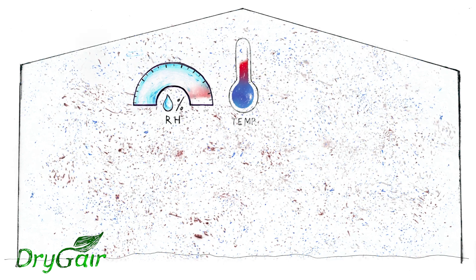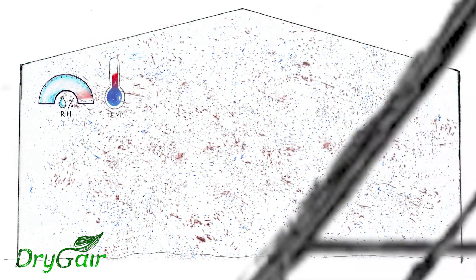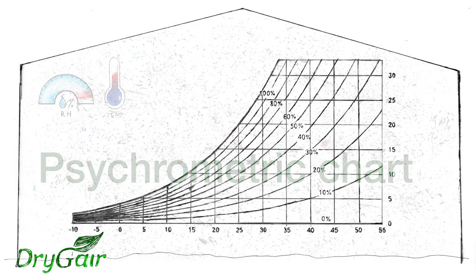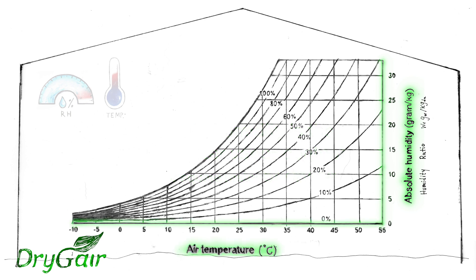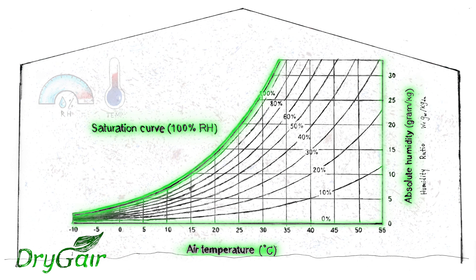To graphically represent the properties of air, we use the psychrometric chart. Absolute humidity represents the actual water vapor content of dry air. This axis represents air temperature, and this is the saturation curve.